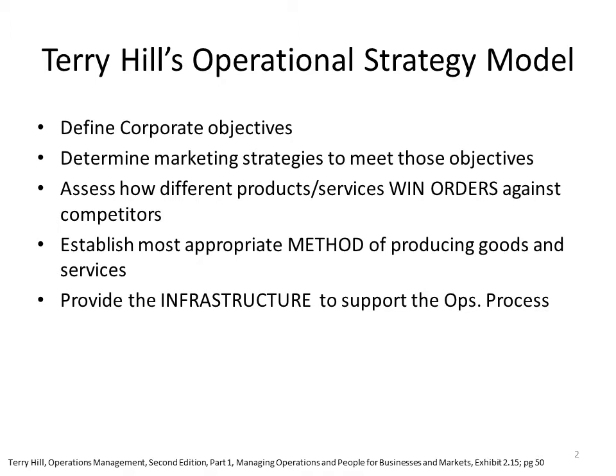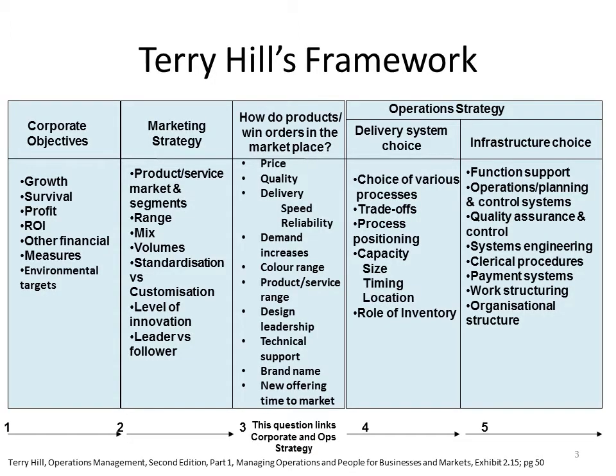This is Terry Hill's Operational Strategy Model. It helps define corporate objectives, determine market strategies, and win business. You look at the most appropriate method for producing goods or services, and also the infrastructure that surrounds that — your supply chain, your billing, and your logistics. The framework is there to help you develop an operations strategy for a business. It works notionally left to right, but really it's a discussion held over four or five points.